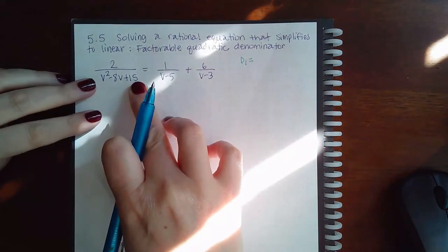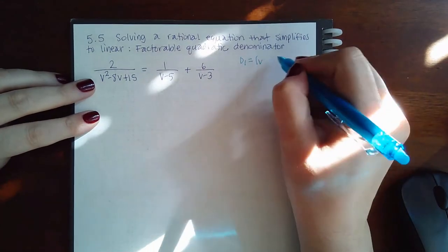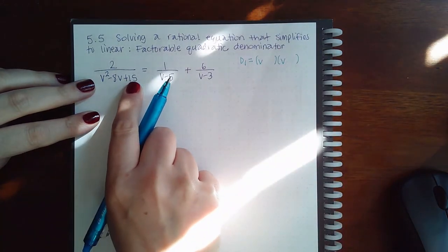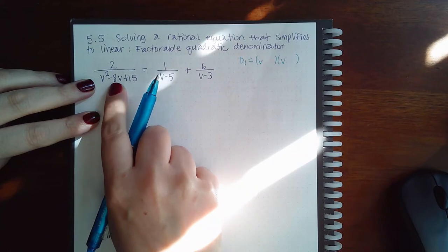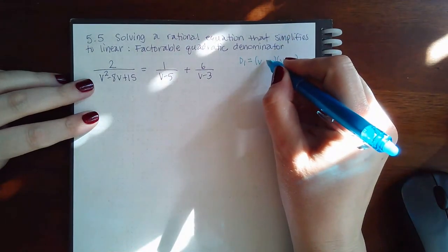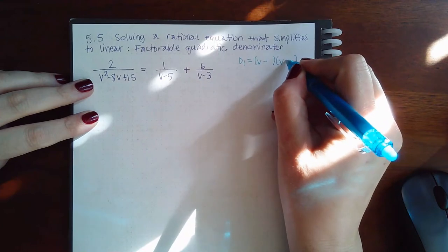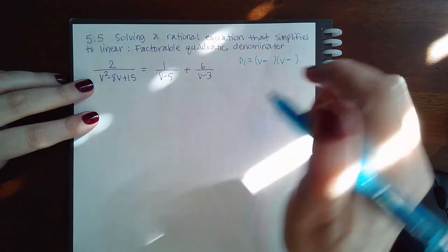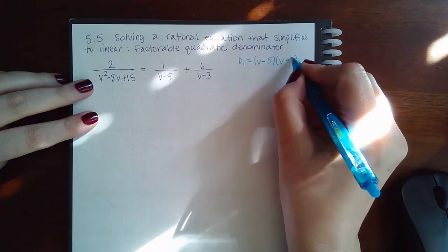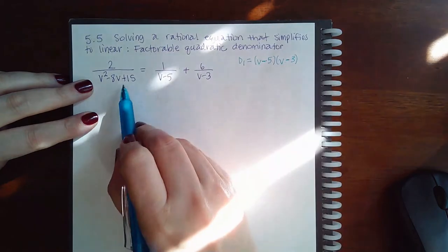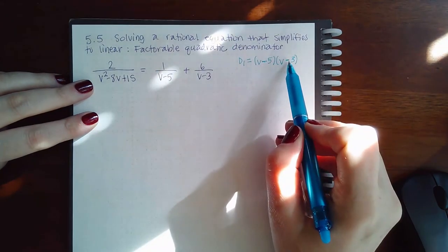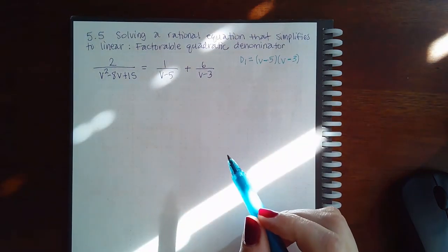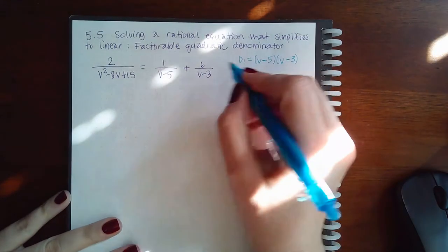This denominator is not in its factored form, but I can factor it. I need multiples that multiply to give me positive 15 but add to give me negative 8. They would both have to be negative to multiply to a positive but add to a negative — so they're going to be 5 and 3. Negative 5 times negative 3 is positive 15, and negative 5 plus negative 3 gives negative 8. So that's the factored form for the first denominator.